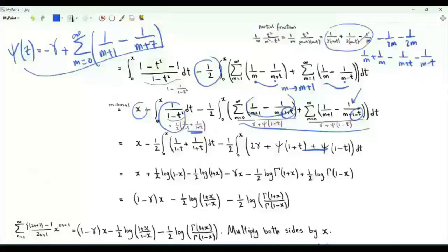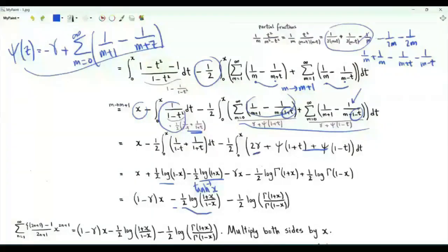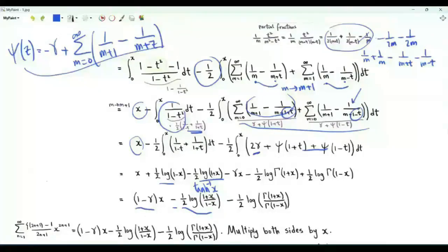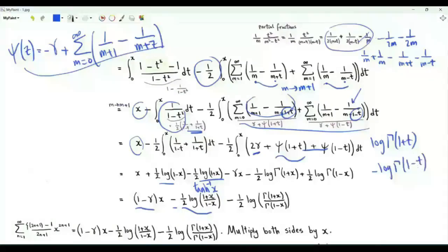After doing the partial fractions and integrating 1/(1 minus t^2), we obtain (1/2)log(1 minus x) minus (1/2)log(1+x), which is minus (1/2)log((1+x)/(1 minus x)), i.e., minus the inverse hyperbolic tangent of x. Integrating the 2γ term gives minus γx. Together with the x from before, we get x(1 minus γ). The antiderivative of ψ(1+t) is log Γ(1+t), and the antiderivative of ψ(1 minus t) is minus log Γ(1 minus t).